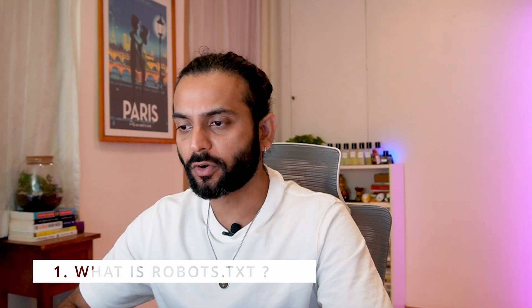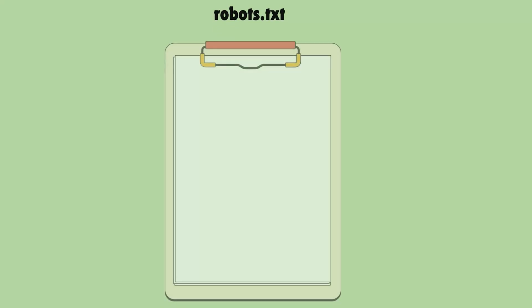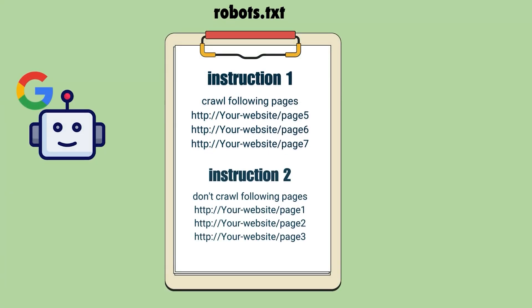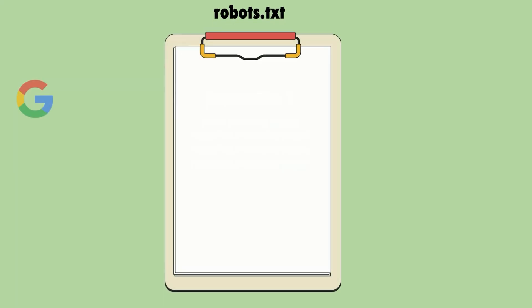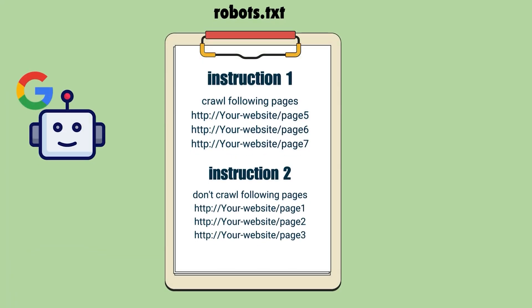What is robots.txt? A robots.txt file is a set of instructions for web crawlers, often used by search engines like Google, Bing, or any other search engine. It acts as guidance for these crawlers. When bots come to our website, we instruct them which pages to access and which pages to avoid.